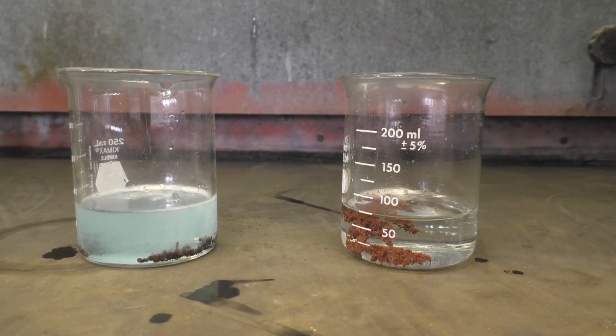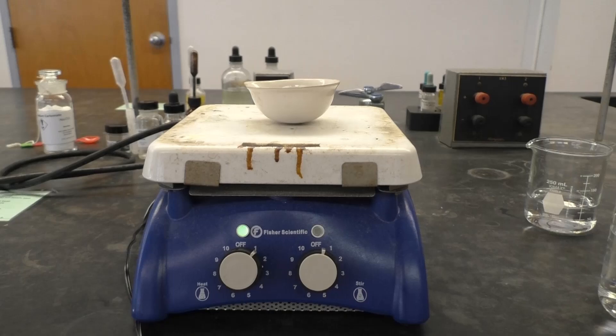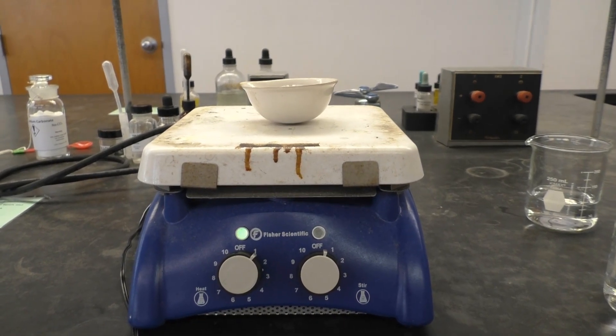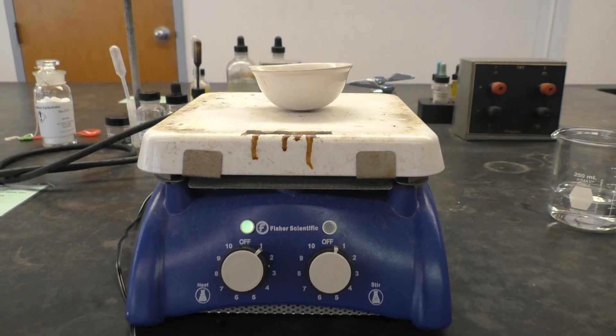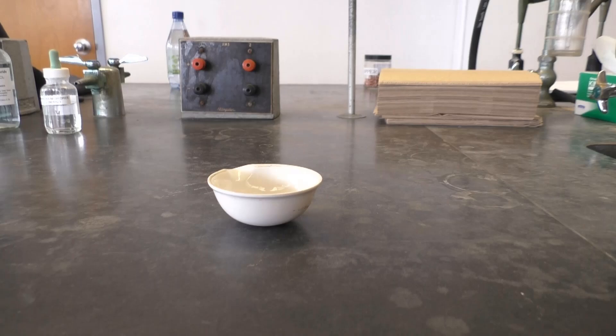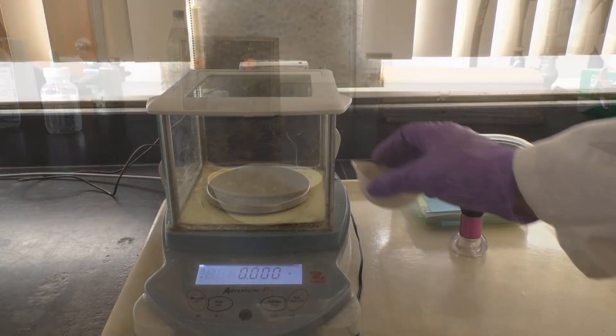Now that you have your final copper metal product, all that's left is to isolate and dry it to obtain your percent recovery. To obtain an accurate mass of your final copper metal, you need a completely dry evaporating dish. Thus, you'll need to heat your dish for about 5 minutes to dry off any water. After allowing your dish to cool, you can then obtain its accurate mass.